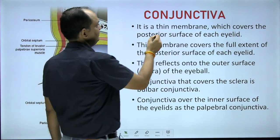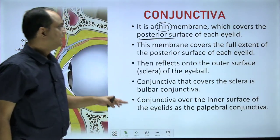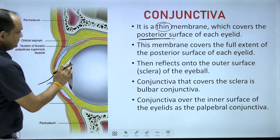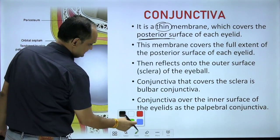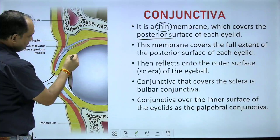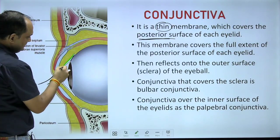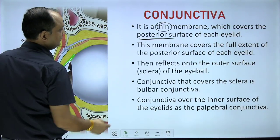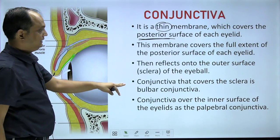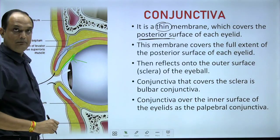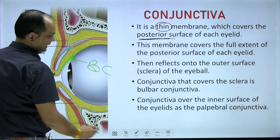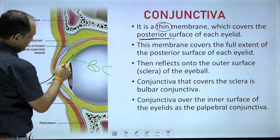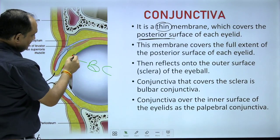The innermost layer is the conjunctiva — a very thin membrane on the inner posterior surface of the eyelids. It covers the full posterior surface of the eyelid and then reflects onto the outer surface of the eyeball (the sclera). The conjunctiva covering the sclera is known as the bulbar conjunctiva, and the conjunctiva covering the inner side of the eyelid is known as the palpebral conjunctiva.